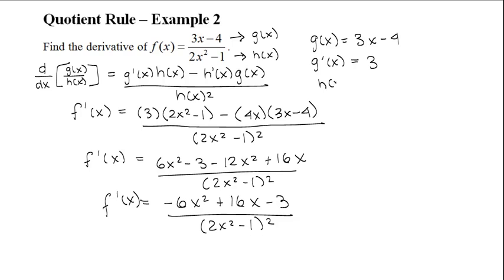Then you'd write out h(x) = 2x² - 1, and take the derivative of that function, which is h'(x) = 4x.